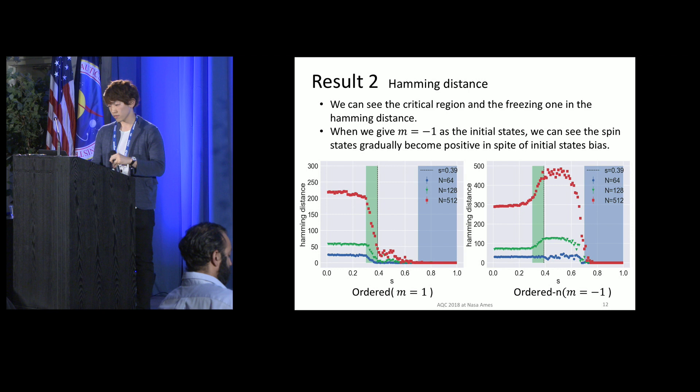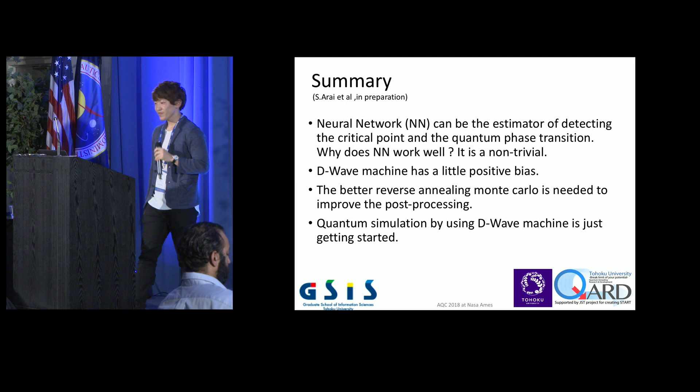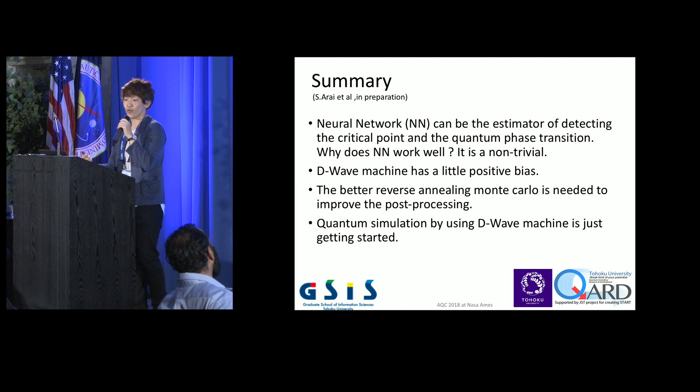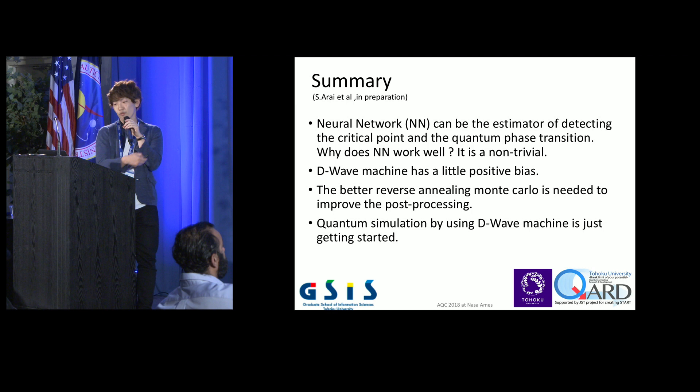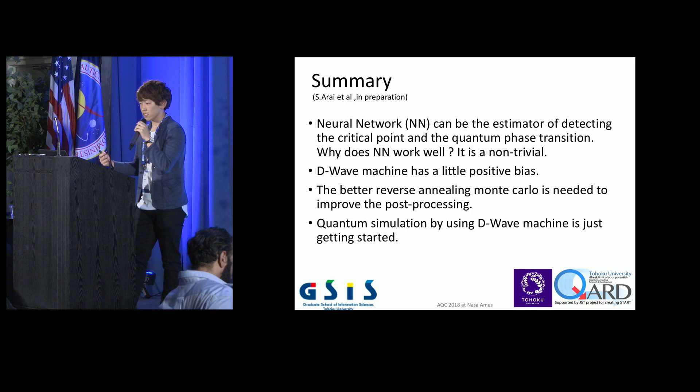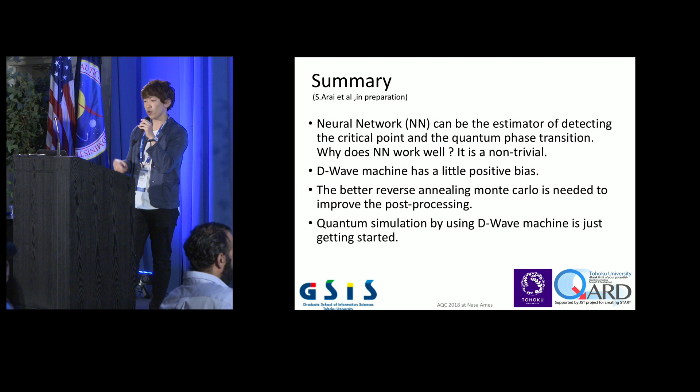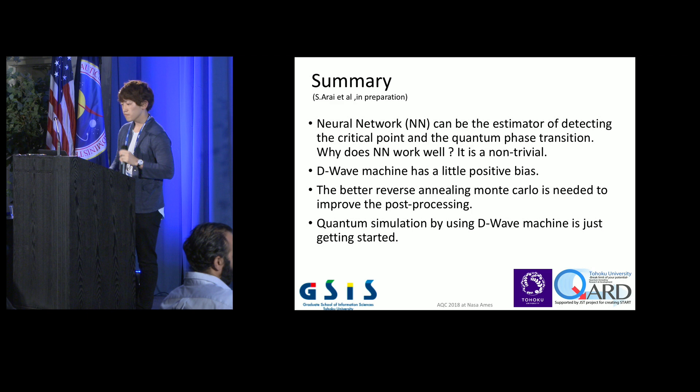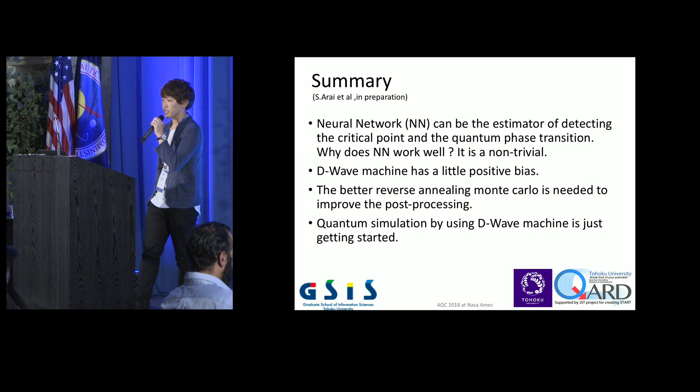Finally, we summarize our presentation. We have shown that the neural network can be an estimator for detecting the critical point in quantum phase transition. Why does the neural network work well? It's non-trivial. The D-Wave machine has a little positive bias within our simulation. Better reverse annealing Monte Carlo is needed to improve post-processing. Quantum simulation using the D-Wave machine is just getting started, so we have to increase the case studies. That's all. Thank you for your attention.